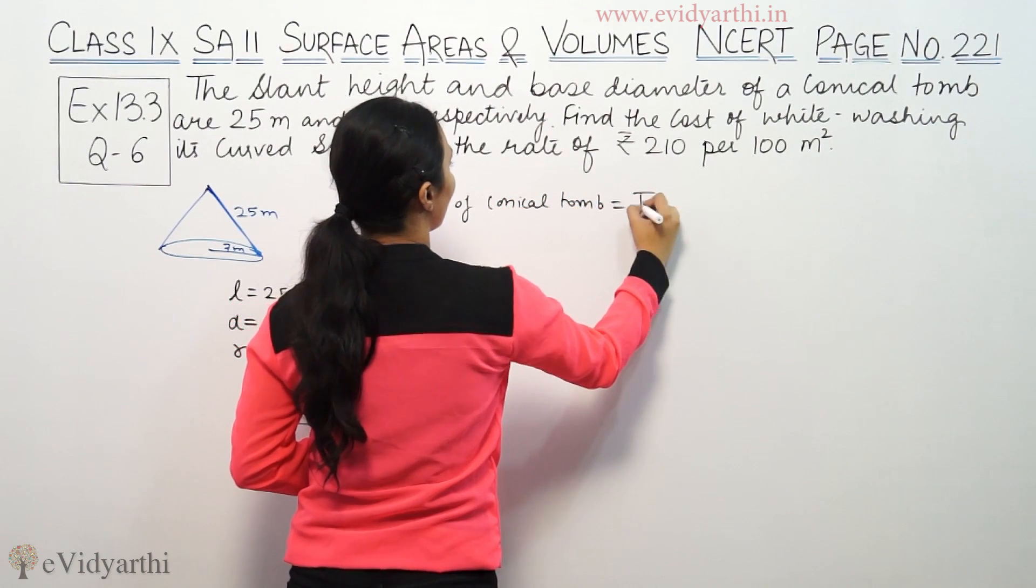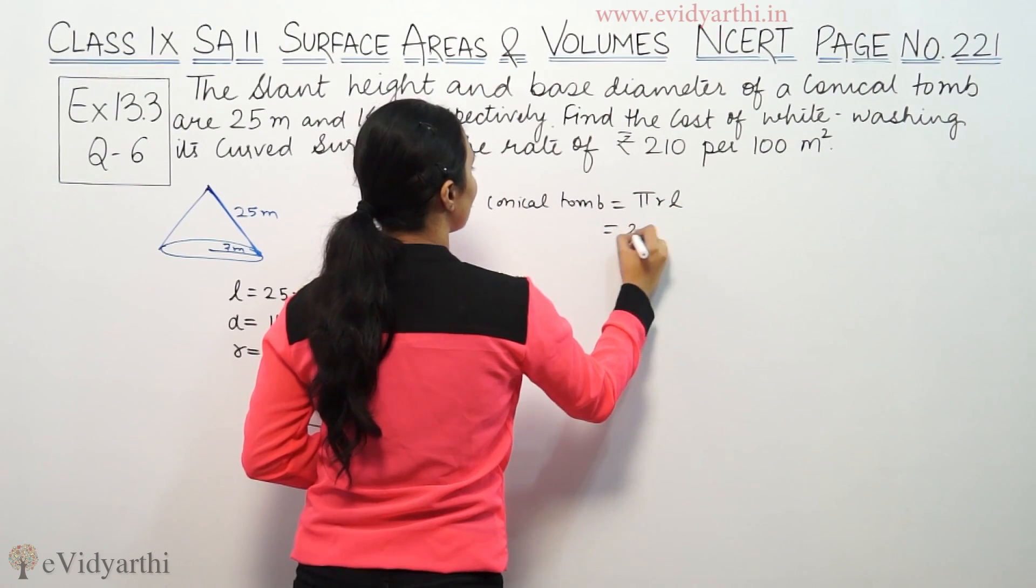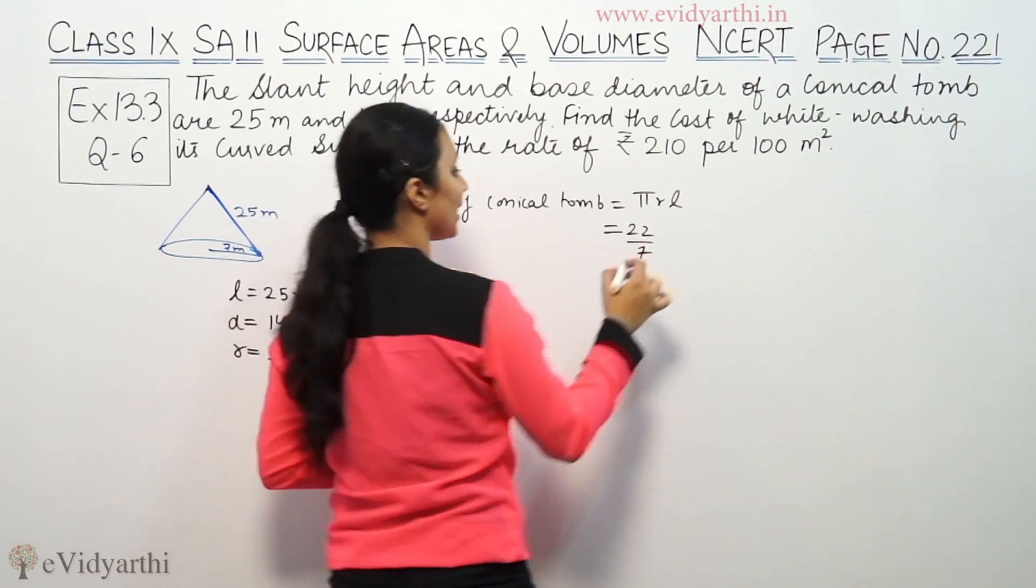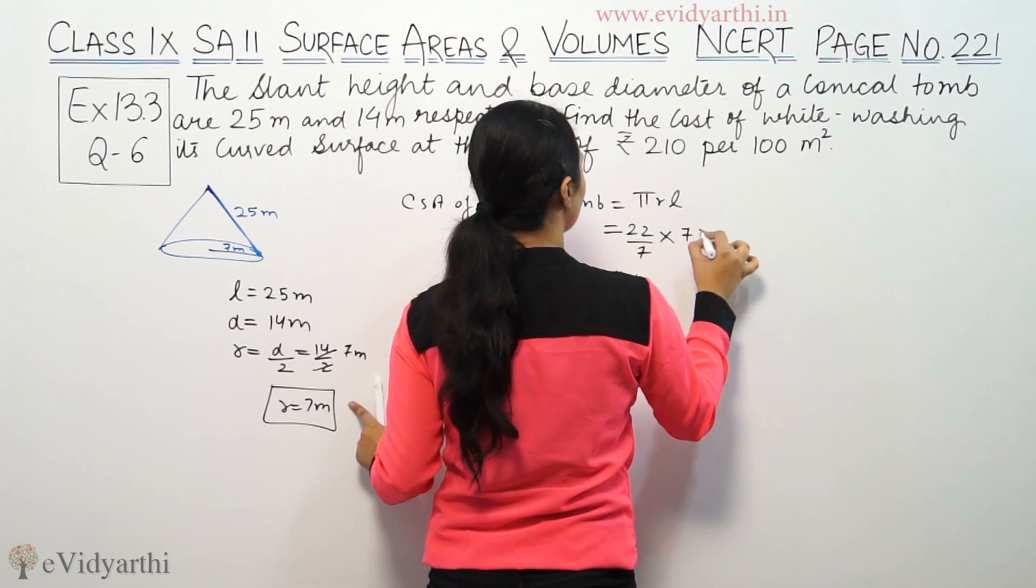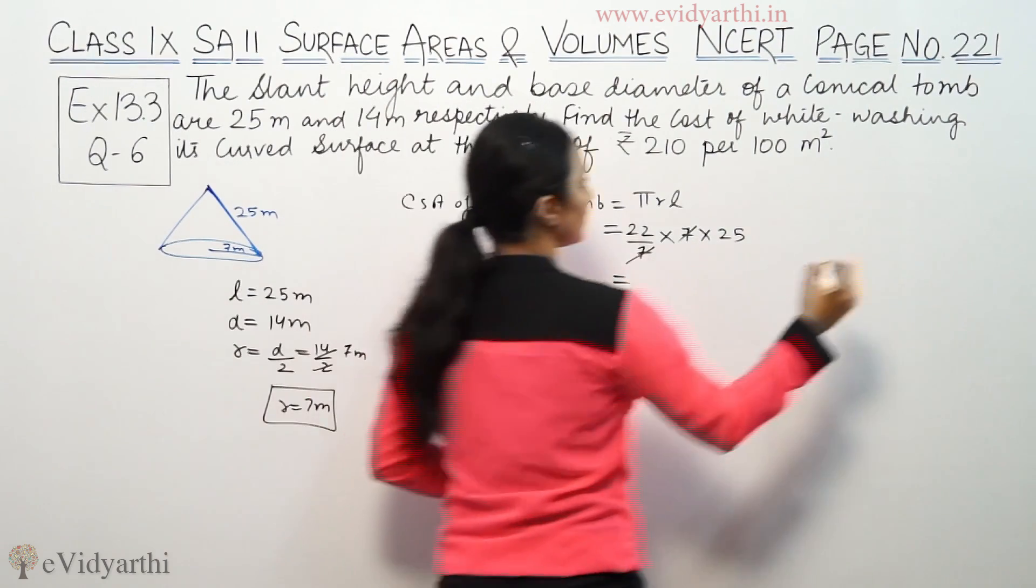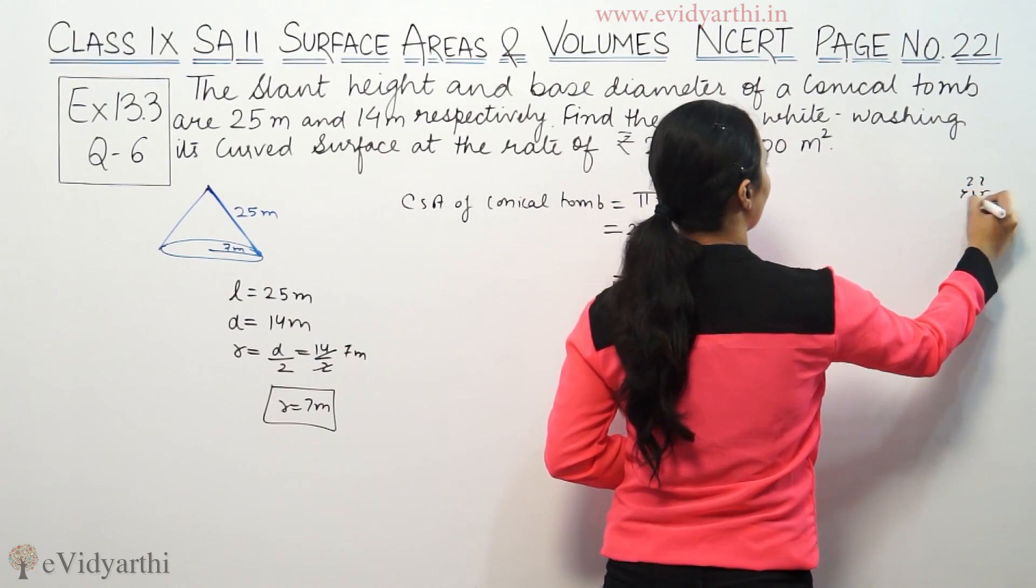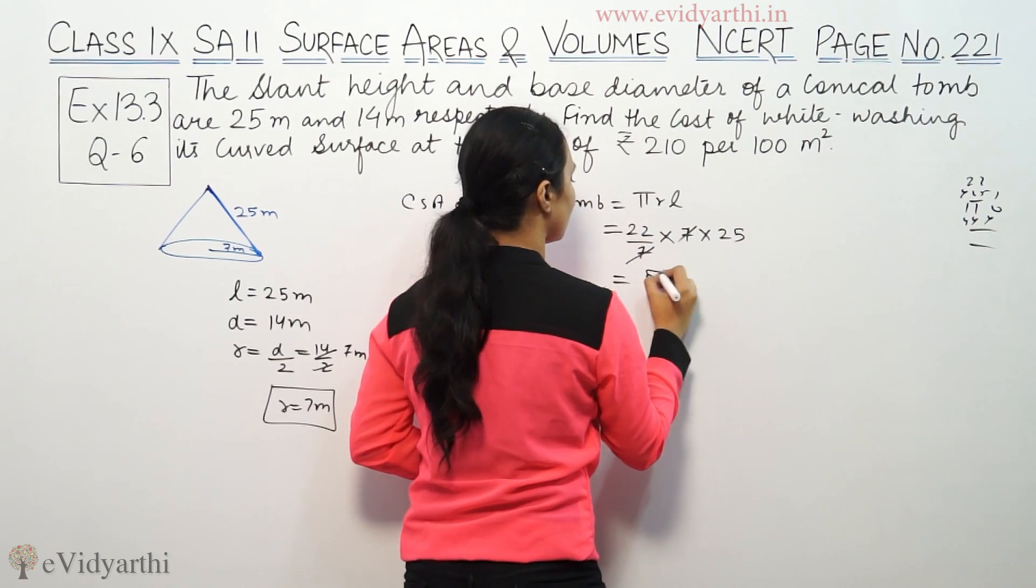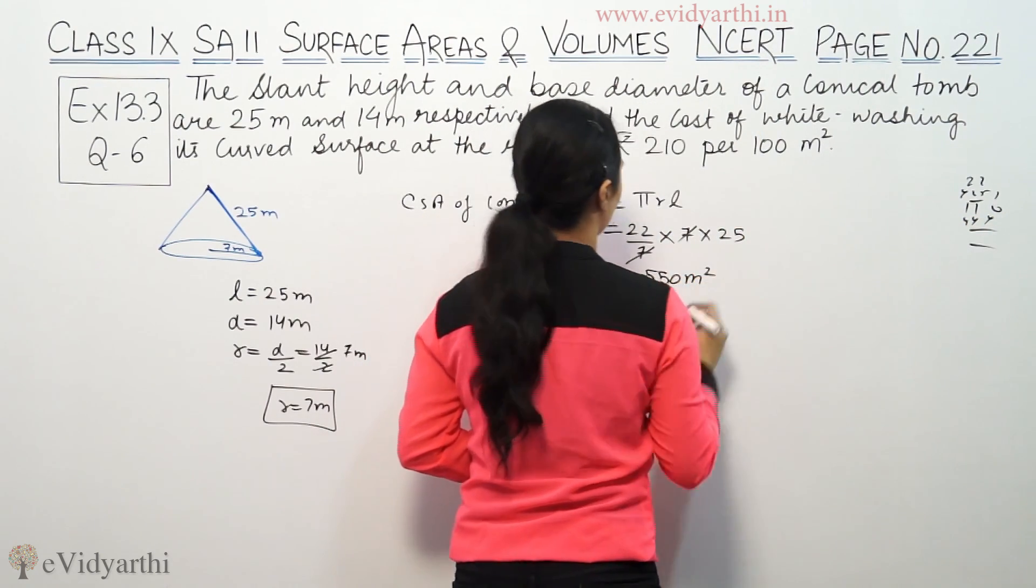The curved surface area is equal to pi R L. Pi is 22 by 7, radius is 7, slant height is 25. So 22 into 25 will be 550 meters square.